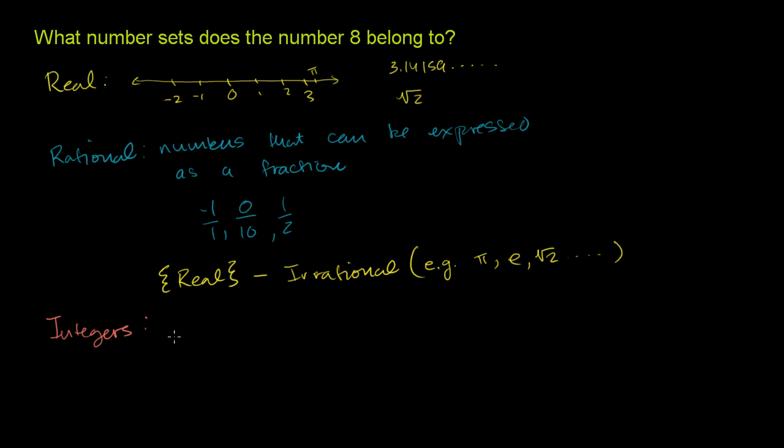So these are, you know, we could just go from the negative direction, maybe negative 2, negative 1, then 0, then we get 1, 2, 3. I think you get the idea. It's all of the positive and negative whole numbers, and it includes 0.